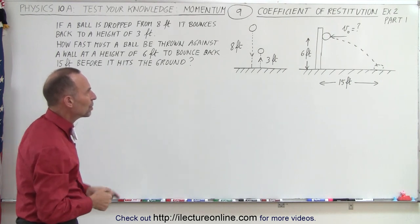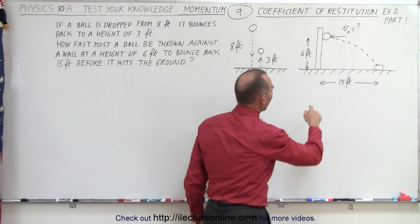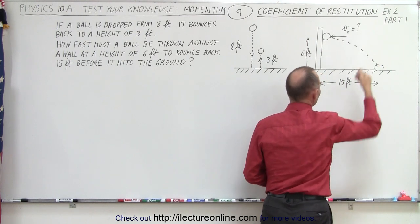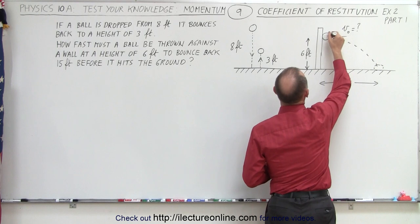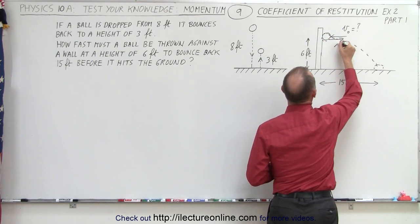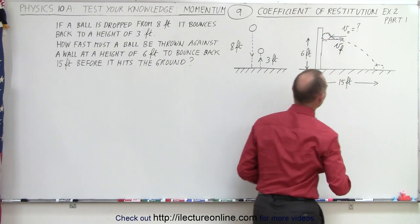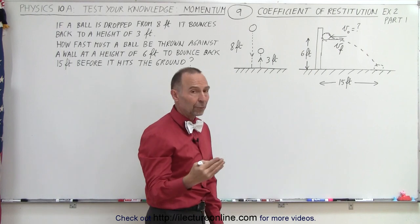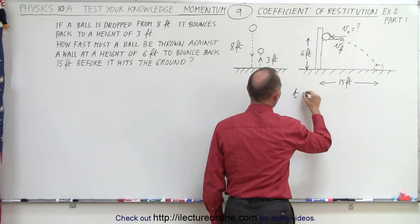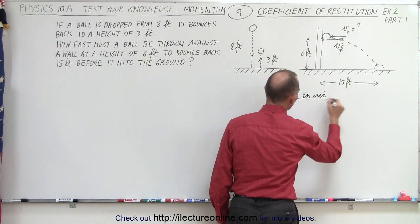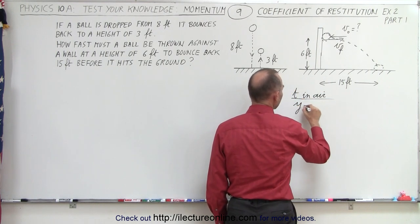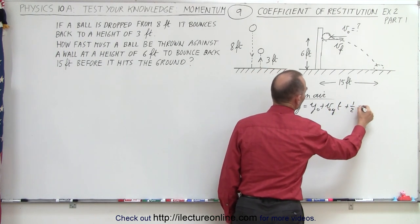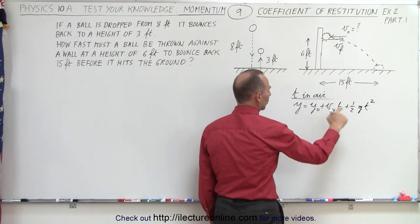First, we can figure out how fast the return velocity needs to be in order to reach a distance of 15 feet before it hits the ground. The ball will have a return velocity — a v final in the horizontal direction. To find that, we need the time in the air using the equation y equals y-naught plus v-naught-y times t plus one-half g t squared.